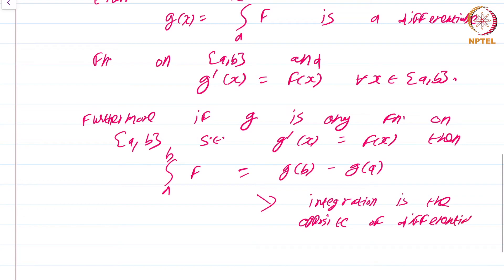If you start with a continuous function and take any anti-derivative — that is a function g such that g'(x) = f(x) — then integrating from a to b is reduced to finding g and then substituting the limits to get g(b) − g(a).